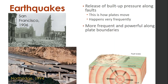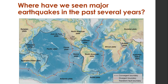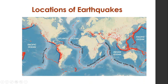Earthquakes are more frequent and powerful along plate boundaries, which makes sense — they do happen away from plate boundaries but are less common. There have been major ones in China in 2008 and 2013, and in New Madrid in 1811–1812. Looking at where earthquakes have occurred in recent years, they happen mostly along plate boundaries and the Ring of Fire — here we are in Southern California.